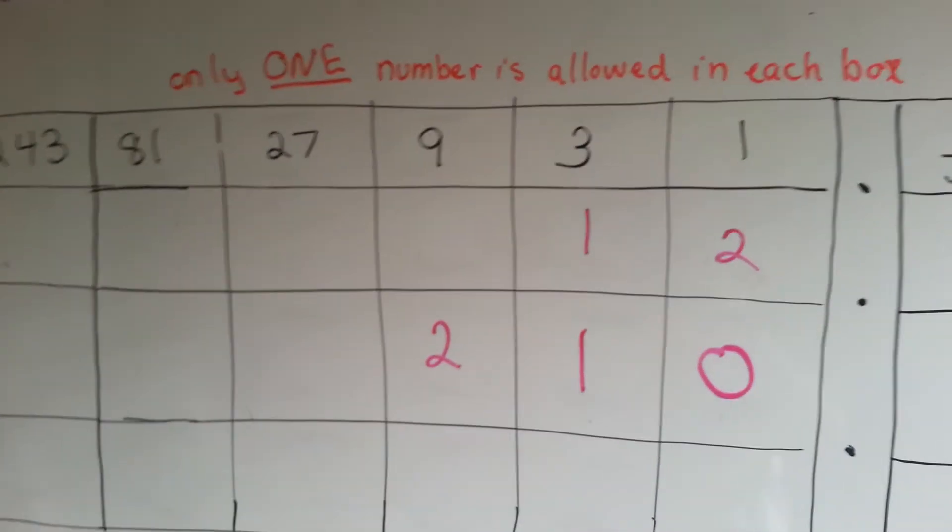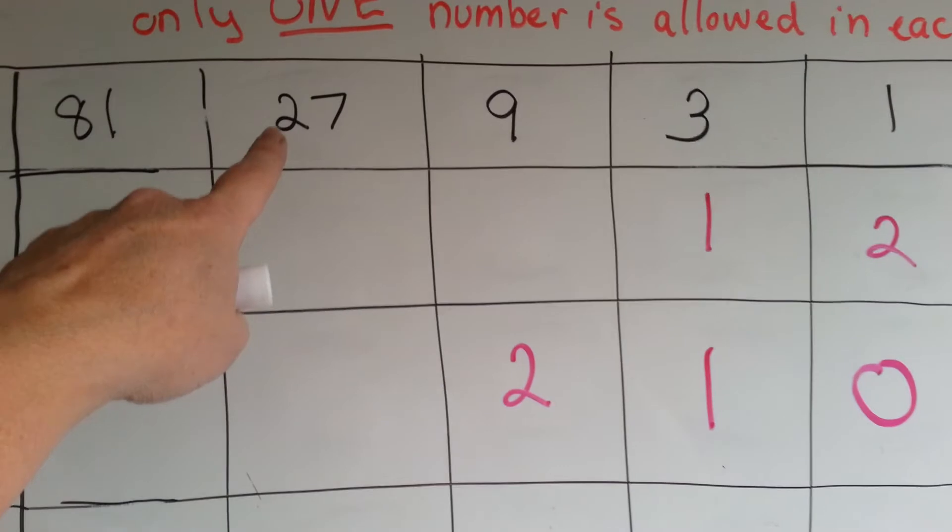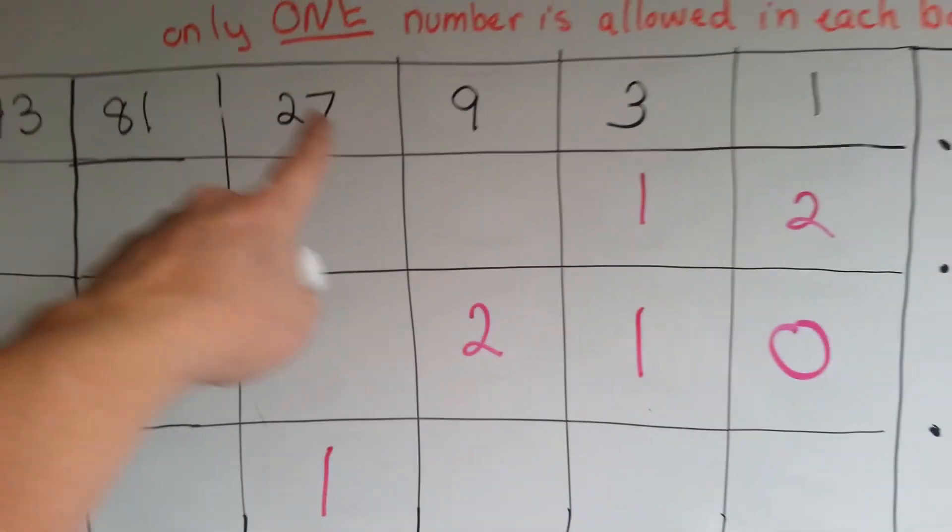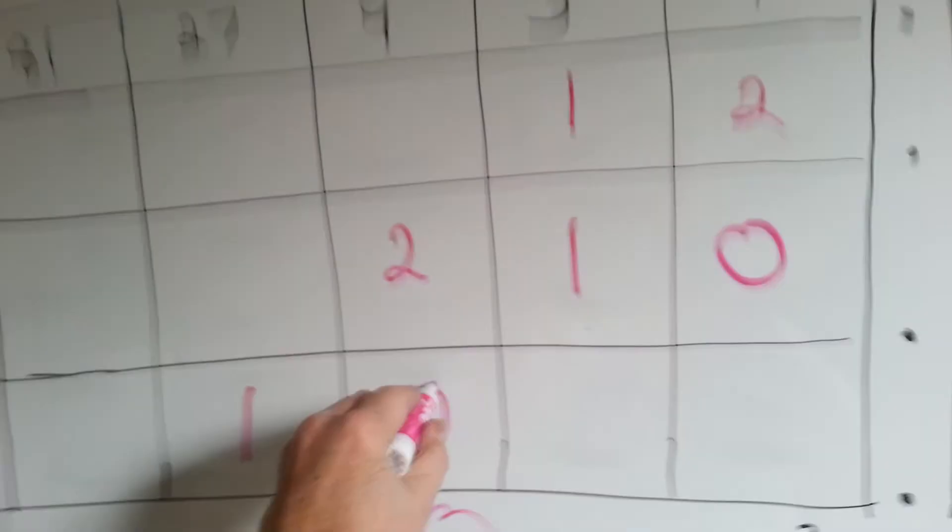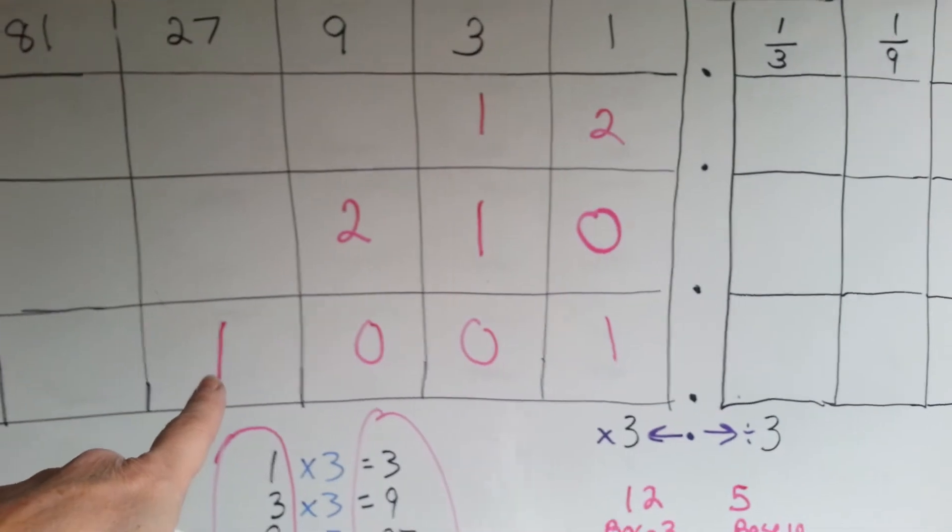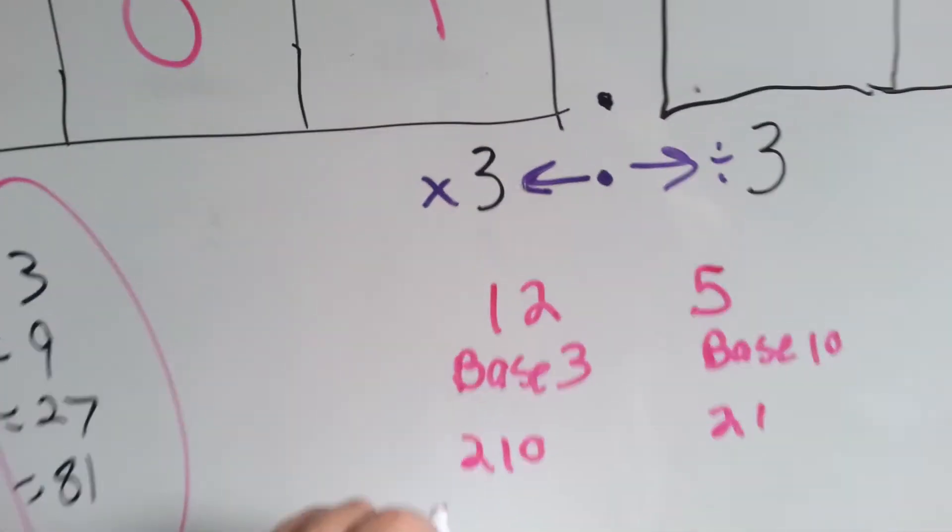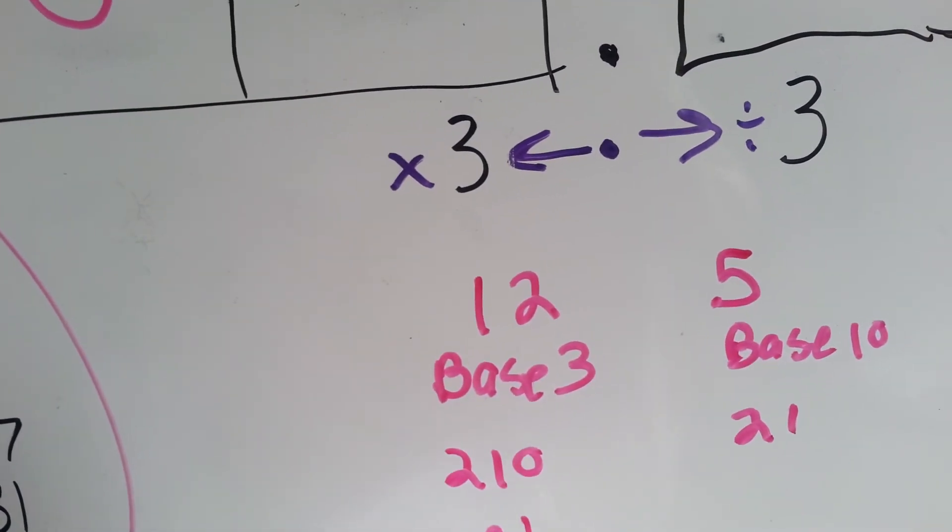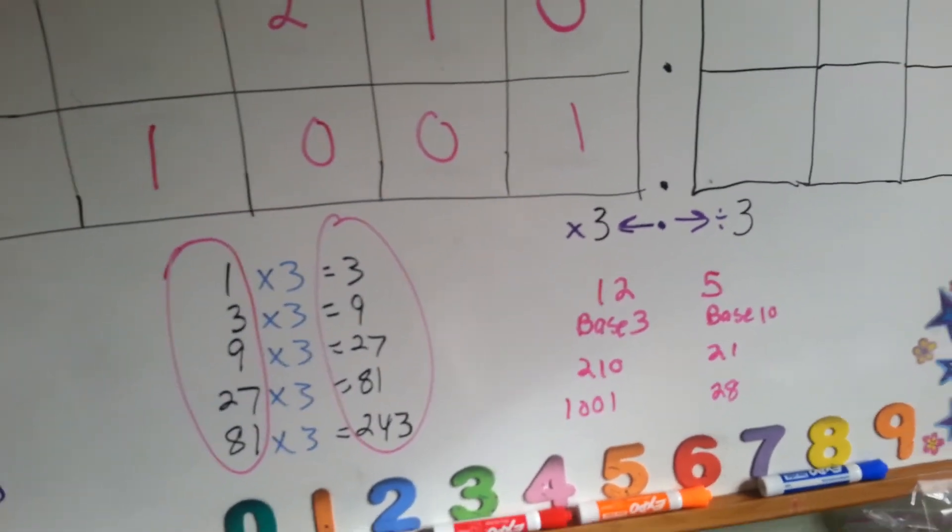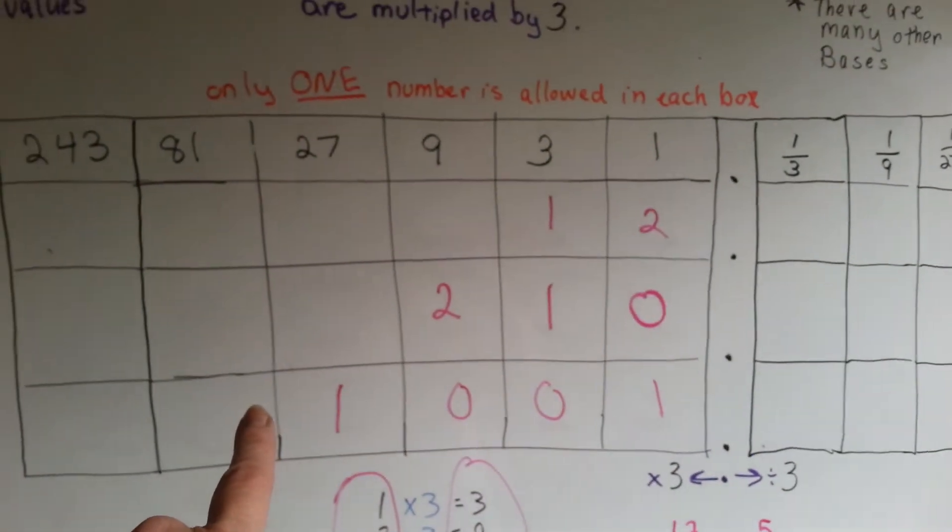What if you wanted to write the number 28? You'd have 1 twenty-seven, no 9s, no 3s, and a 1. And that would give you 28. 1, 0, 0, 1 would be 28 in base 10. See that?